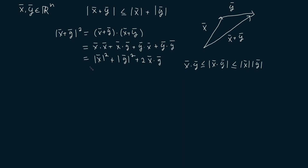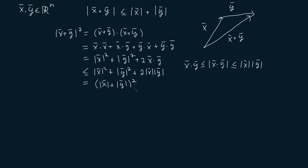But now what we get is that this is then less than or equal to the magnitude of x squared plus the magnitude of y squared plus 2 times the magnitude of x times the magnitude of y. But this is then nothing more than the magnitude of x plus the magnitude of y, all squared.